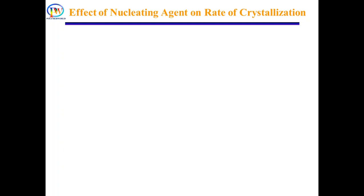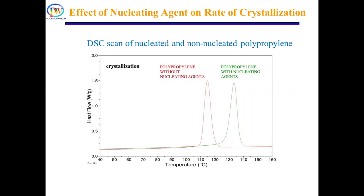Now the question is: how do we know if an additive is acting as a nucleating agent or not? DSC is the most common technique to identify the nucleating behavior of an additive. In a DSC cooling scan of a polymer, the start of the crystallization process at a higher temperature is an indication of the nucleating behavior of the additive added in the polymer matrix.